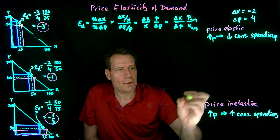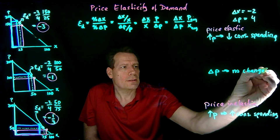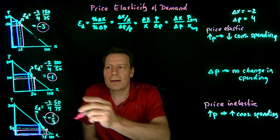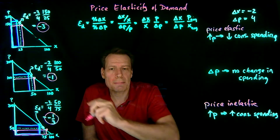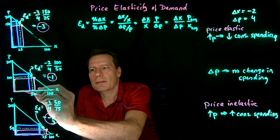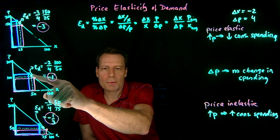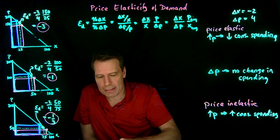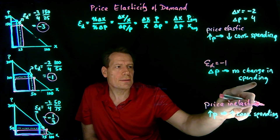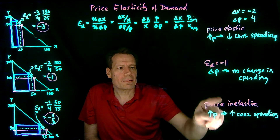Finally, we have the in-between case where a change in price causes no change in consumer spending. That in-between case happens right around the price elasticity of minus 1, which for linear demand curves always occurs at the midpoint of the demand curve. Here the magenta initial spending box and the blue new spending box are such that what we lose is roughly equal to what we gain. So right around where the price elasticity equals minus 1, a change in price causes no change in spending — this is the dividing line between price-elastic and price-inelastic behavior.